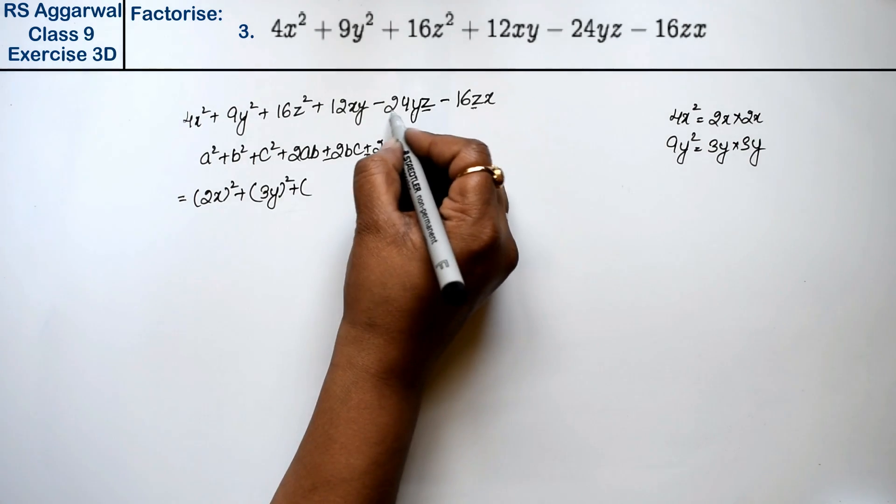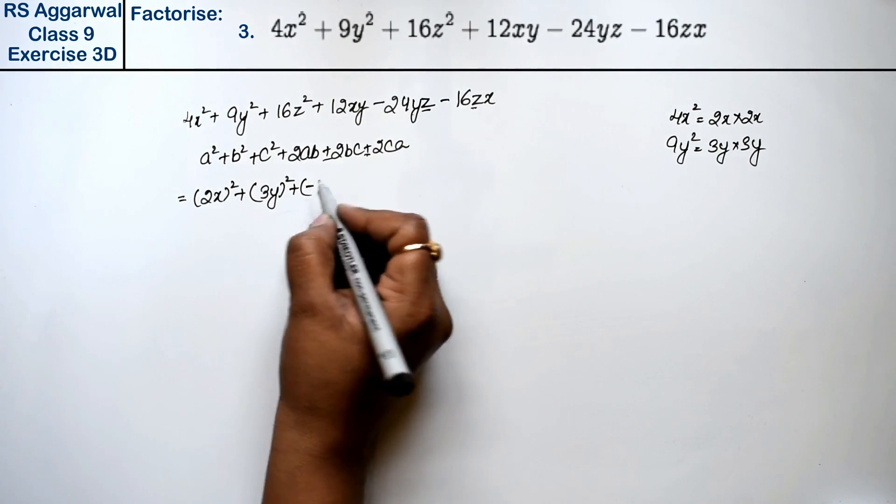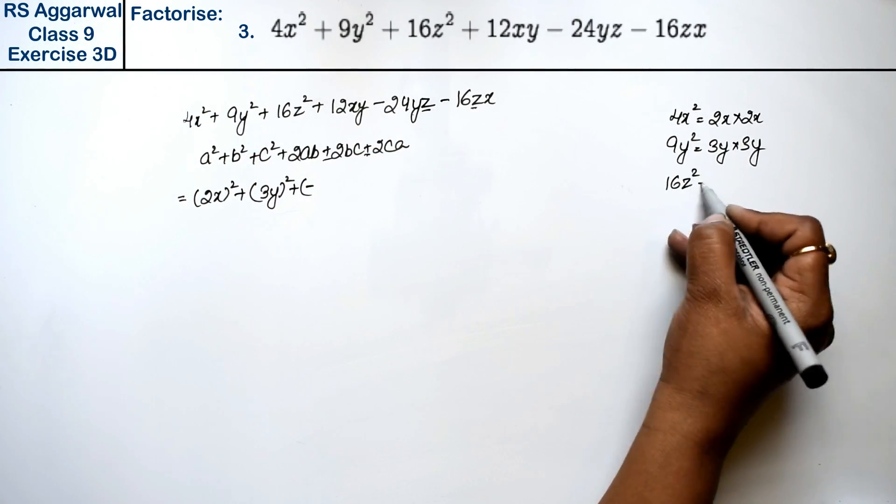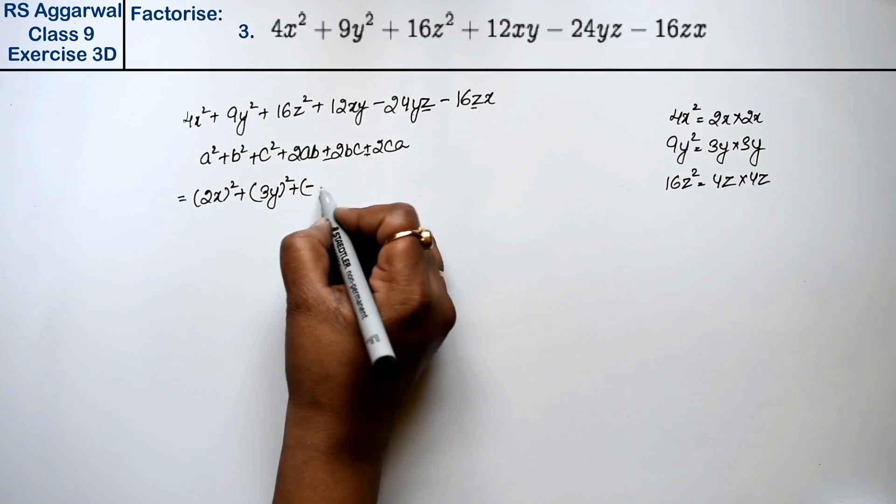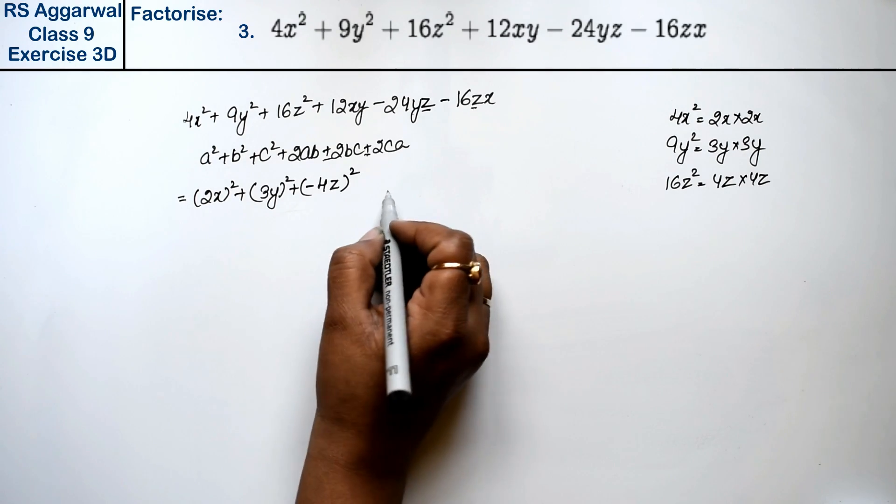Now I have told you that negative, so minus we will put. 16z², we can write as 4z into 4z, so here we have 4z into 4z, that means 4z square.